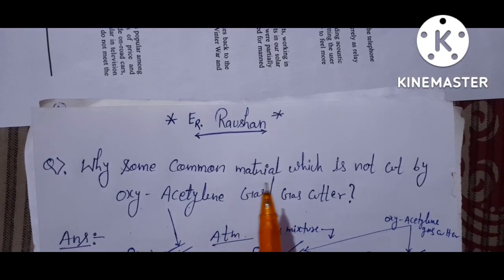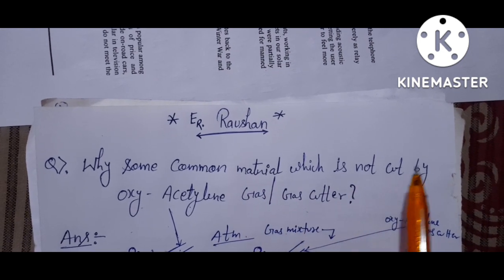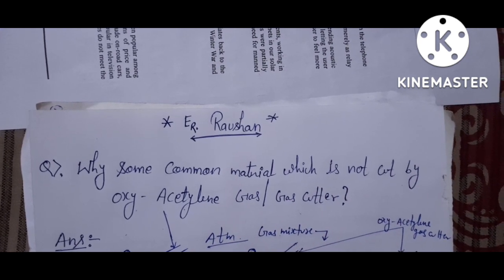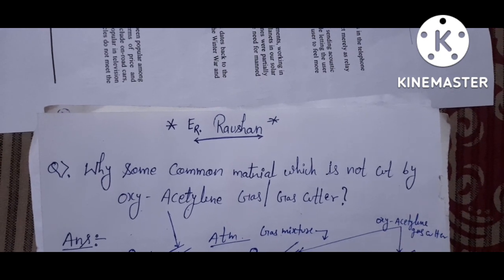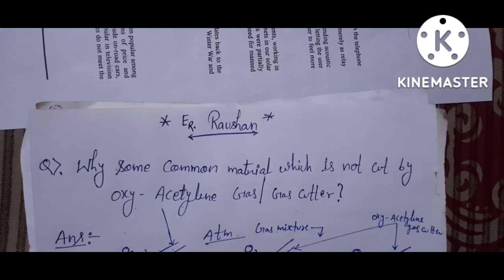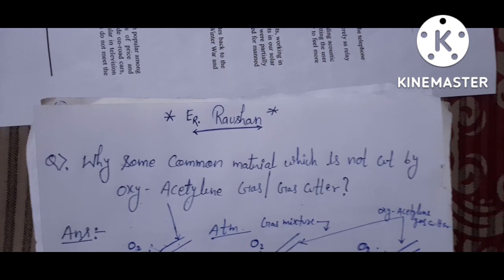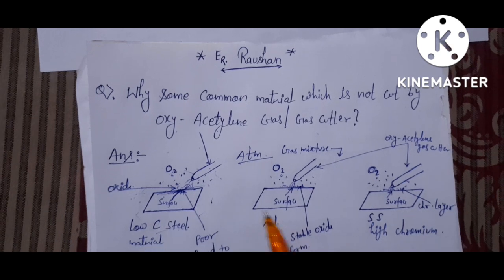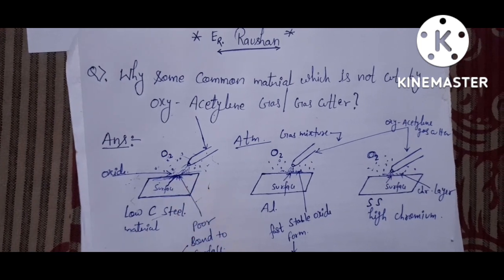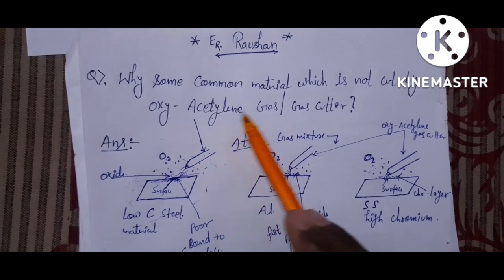Hi friends, today we are discussing a common question: why can some common materials not be cut by oxyacetylene gas cutter? Here you can see a plate of low carbon steel and this is an oxyacetylene gas cutter.